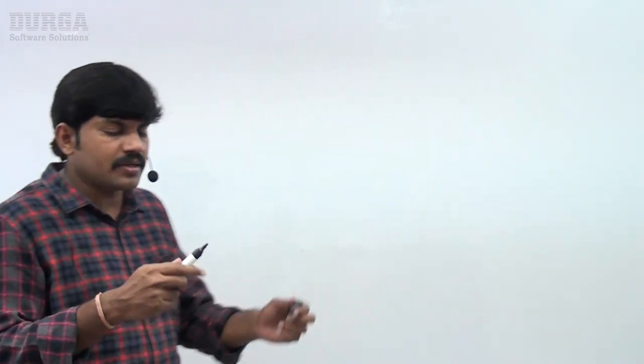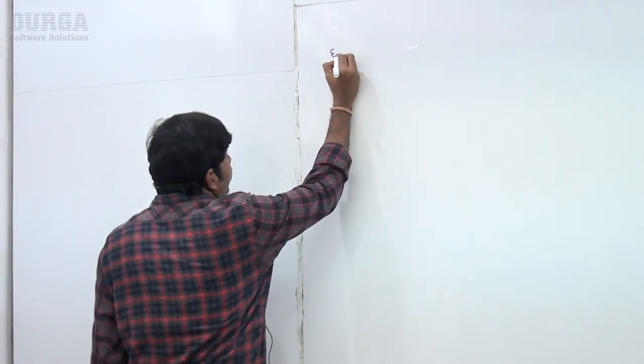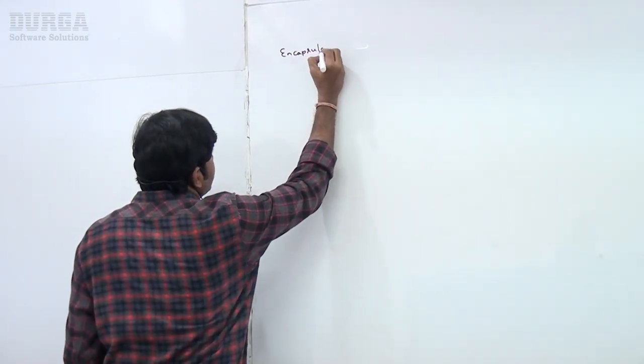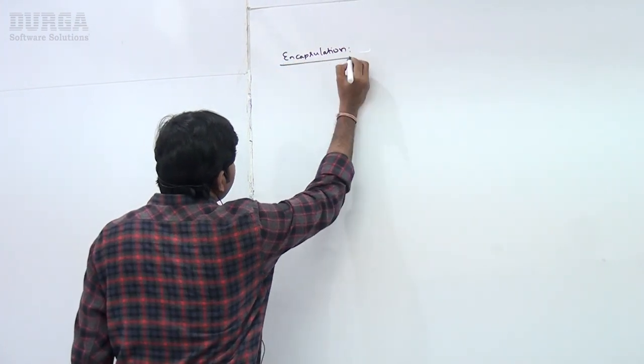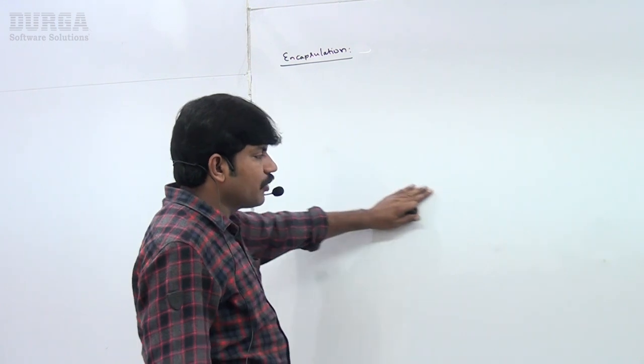In the last videos we covered data hiding and abstraction. What is data hiding? Outside persons should not access our data directly. By declaring the variable as private, we can implement data hiding. What is abstraction? Hiding internal implementation and just highlighting the set of services we are offering is the concept of abstraction. Now the next OOP concept is encapsulation — take very special care.